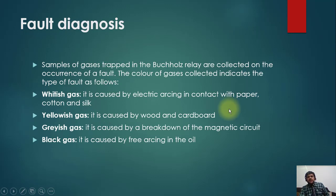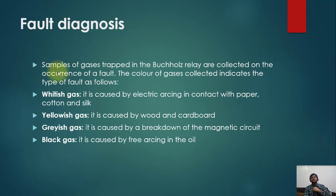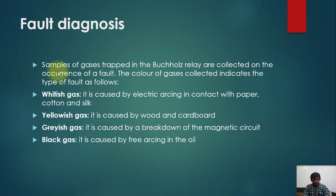The gas trapped inside the Buchholz relay can be used to diagnose the fault. A sample of gas trapped in the relay is collected upon occurrence of a fault. The color of the gas collected indicates the type of fault. When the Buchholz operates, special equipment can be used to collect the gas and send it to a lab, or it can be tested on-site.